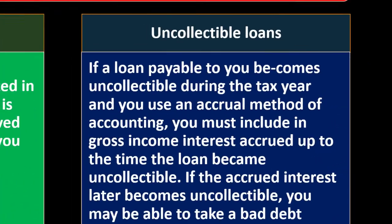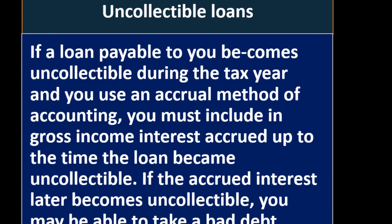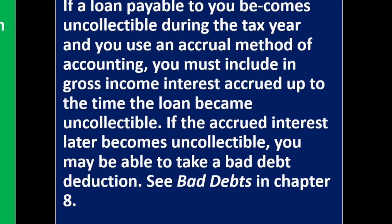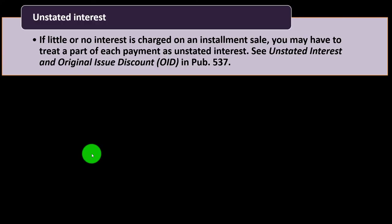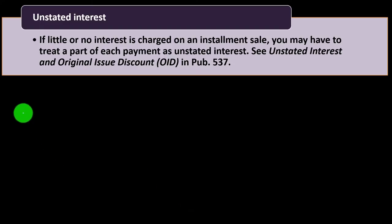Regarding uncollectible loans: if a loan payment becomes uncollectible during the tax year and you use the accrual method of accounting, you must include in gross income the interest accrued up to the time the loan became uncollectible. If the accrued interest later becomes uncollectible, you may be able to take a bad debt deduction. For more detail on that, see chapter 8 of the publication.